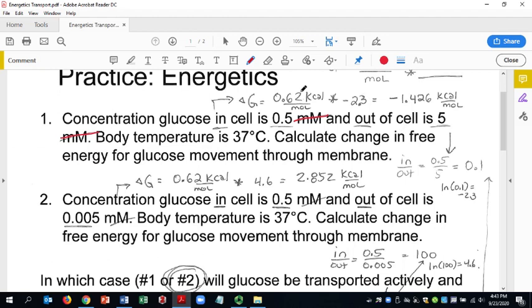So I multiply negative 2.3 by 0.62 and I end up with negative 1.426. As we talked about in class, this is a negative delta G, it's going to want to happen, it makes sense. There's more glucose outside the cell than inside the cell, it's going to go through the membrane pretty quickly.